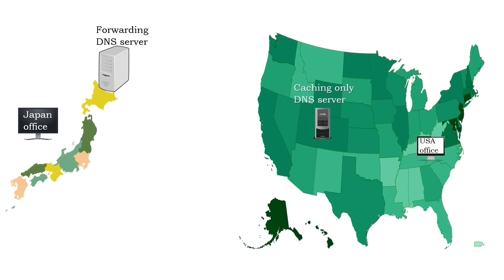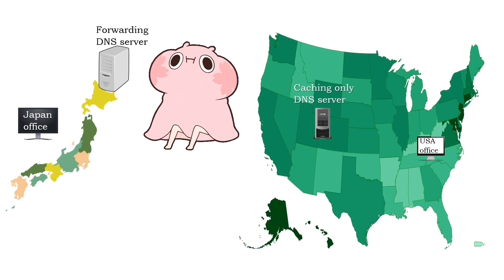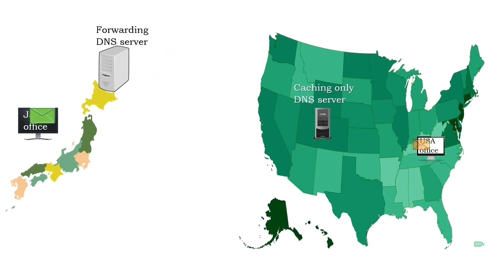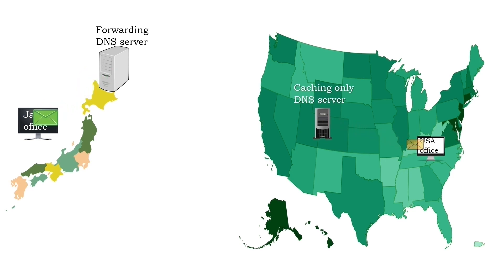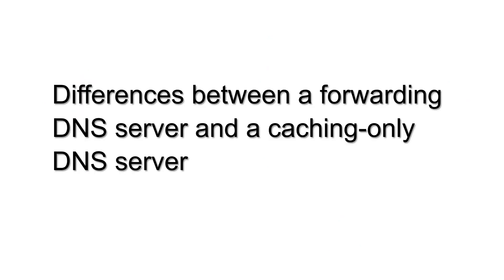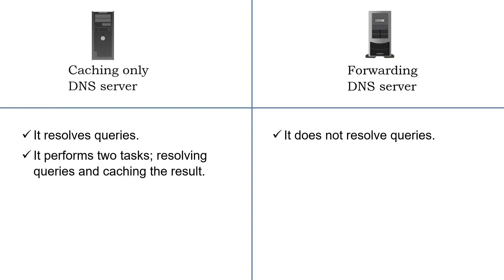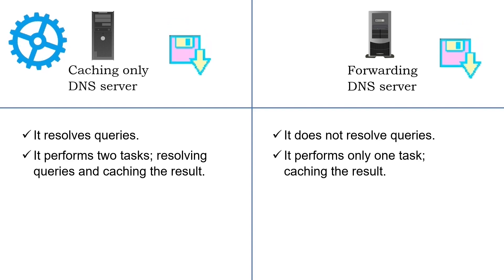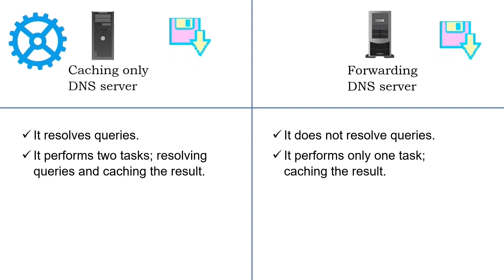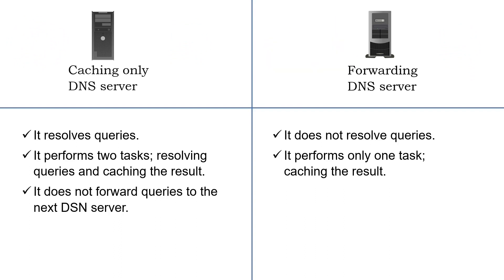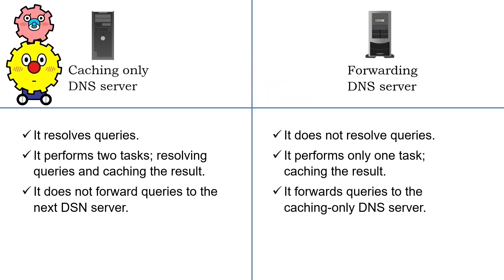Once a forwarding DNS is implemented, Japan office computers do not need to communicate with the caching-only DNS server in the USA. They send recursive queries to the forwarding DNS server, which forwards them to the caching-only DNS server. The caching-only DNS server resolves queries and replies to the forwarding DNS server, which saves answers in its cache and uses that cache to resolve further queries. This reduces the time the Japan office computers need to resolve queries. A caching-only DNS server resolves queries while a forwarding DNS server does not — it forwards them to the caching-only DNS server.